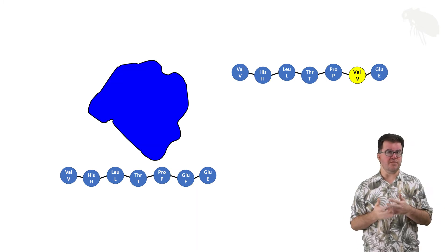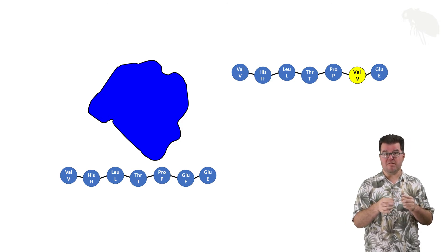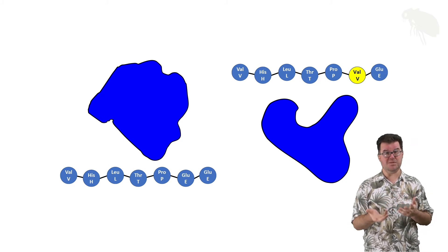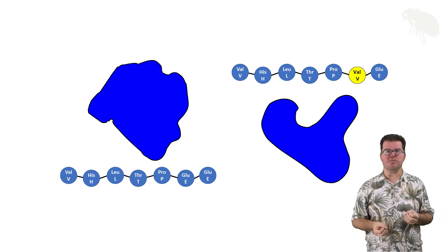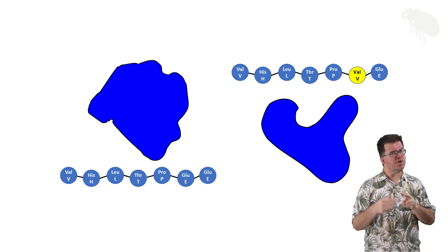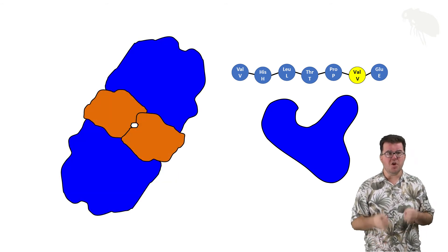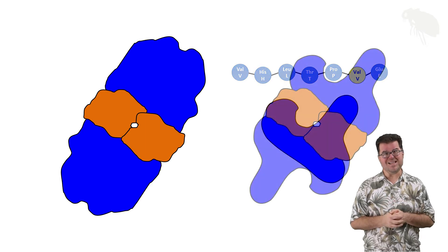So you should recognize this as the cartoon I've used for normal hemoglobin. When we make this valine substitution, this is what happens to the tertiary structure. Now that's a pretty substantial change. And keep in mind the actual functioning hemoglobin protein has two of these. Now it also has two alpha hemoglobins. Even if we don't change alpha hemoglobin, we're going to now impact the quaternary structure and it's not going to look something like this.